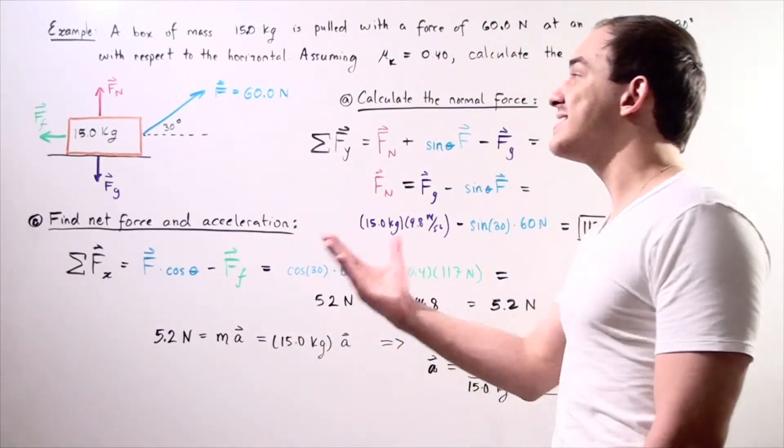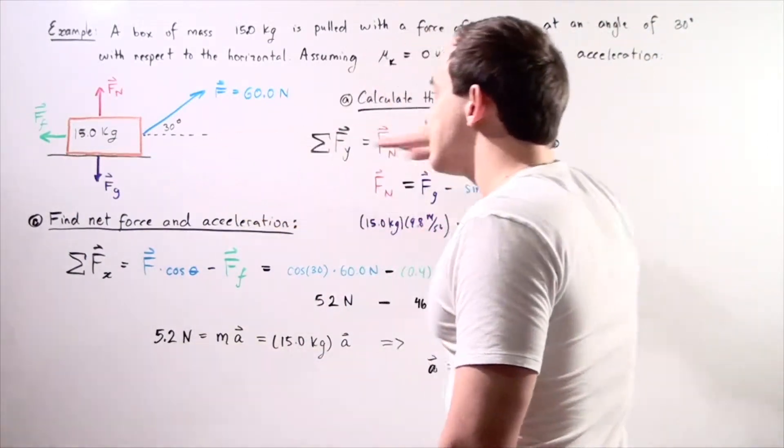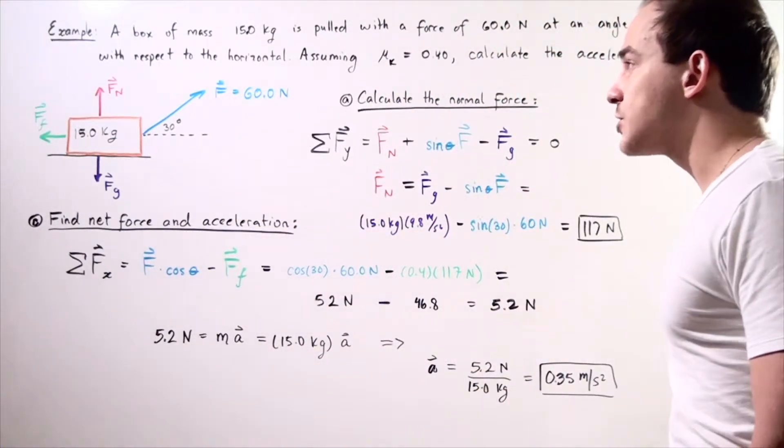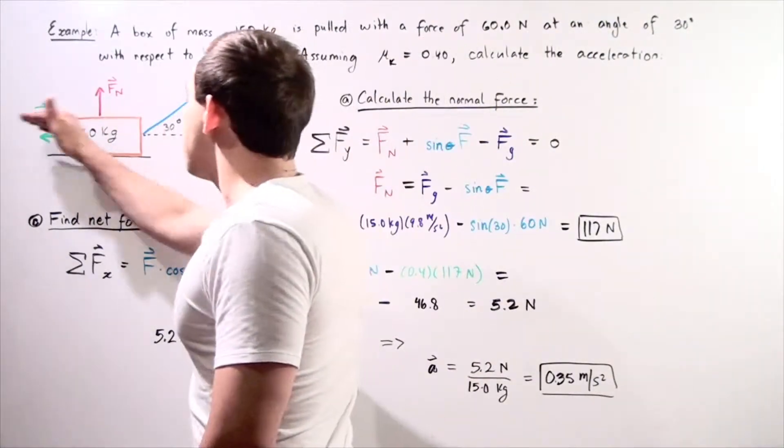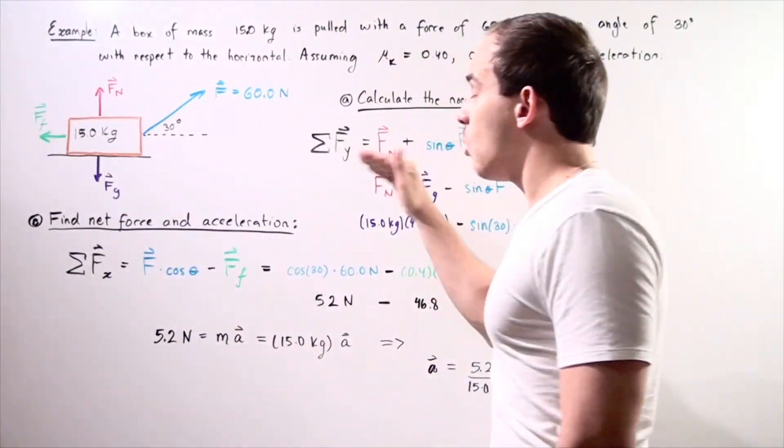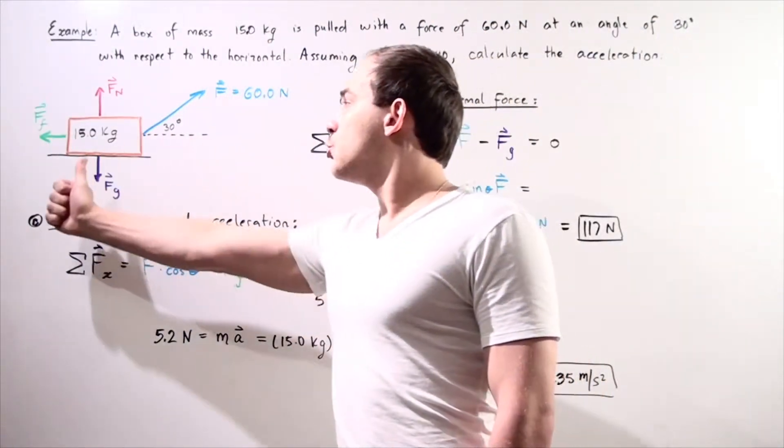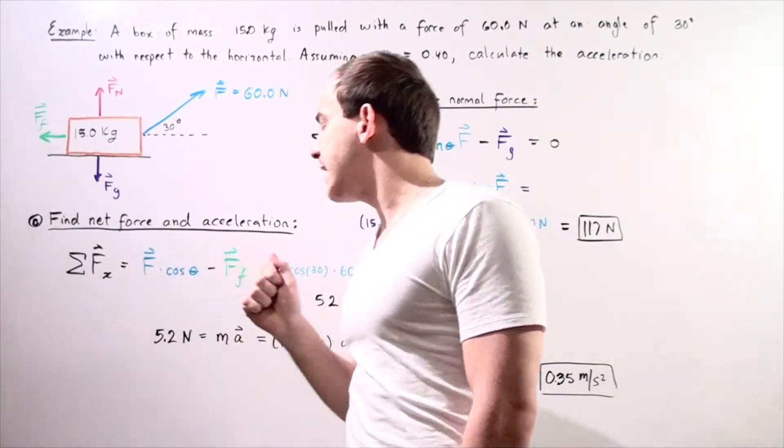Our object is actually accelerating along the x axis in the positive direction. We have to sum up all the forces along the x axis. We choose going this way to be positive, going back to be negative.